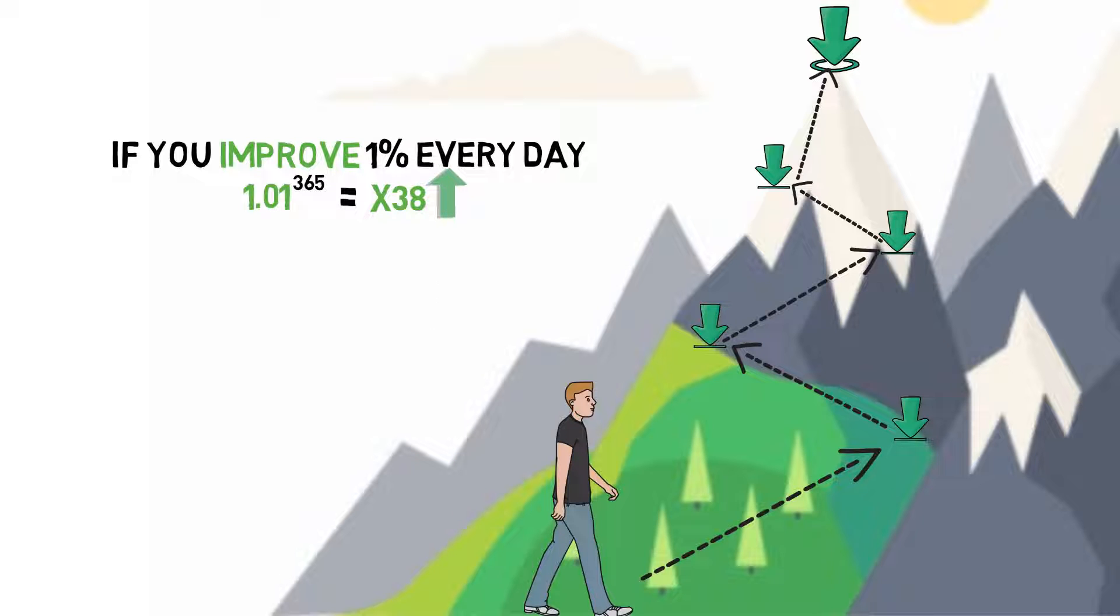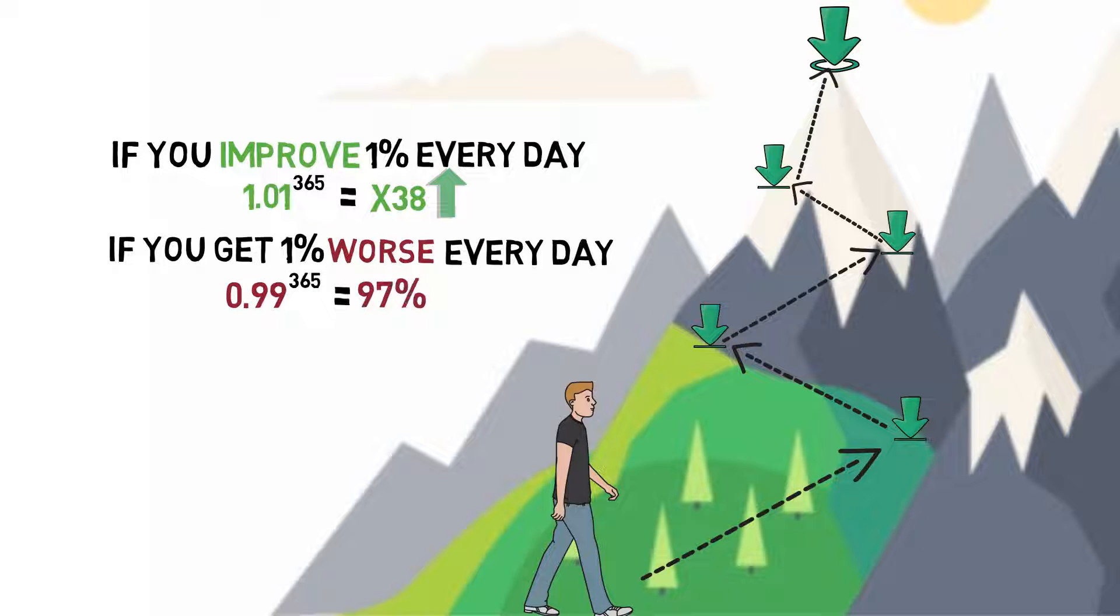If you think this is not that big of a gain, look what happens when, instead of improving, you get stuck and go backwards. If you get 1% worse every day, at the end of the year you will be 97% worse.